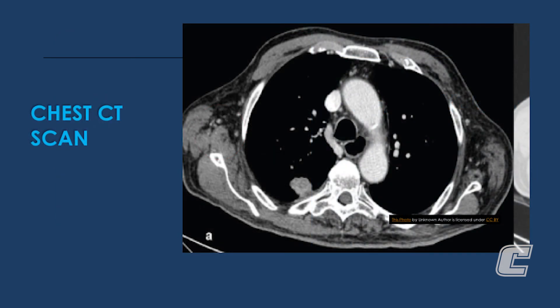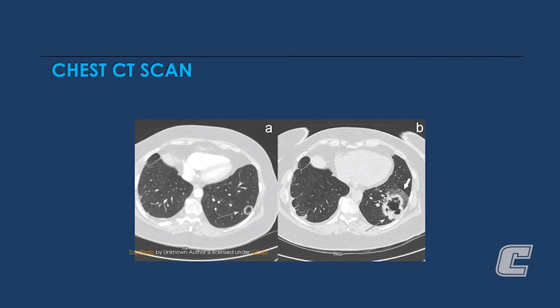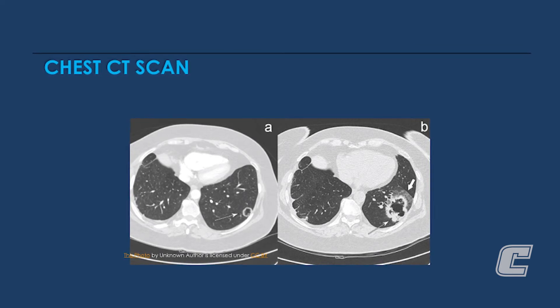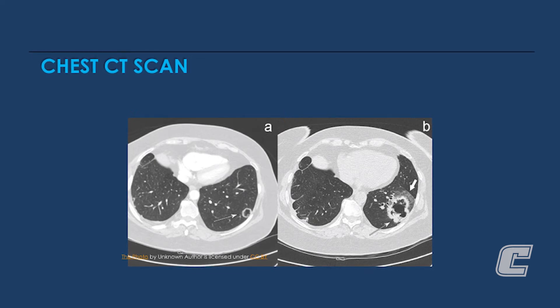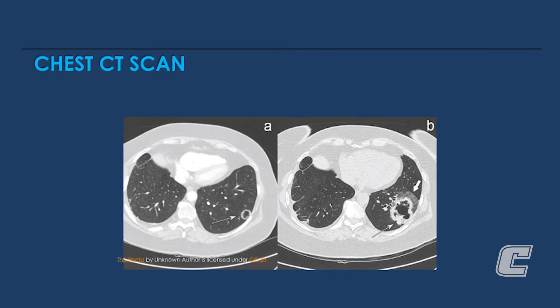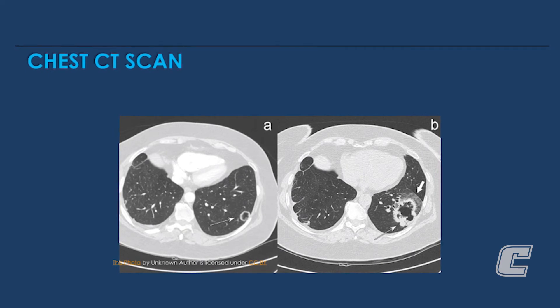A chest CT scan is a cross-sectional radiographic study that gives more information than a chest x-ray. The orientation is that of standing at the feet of the patient and looking toward the head. The white areas in the center represent the great vessels above the heart; the black areas represent air — the right lung and left lung, the windpipe, and the esophagus. The white area near the back is the spine, and on this image there is a nodular grayish area to the left of the spine representing a lung cancer in the right lung.